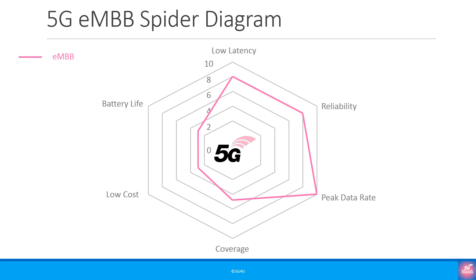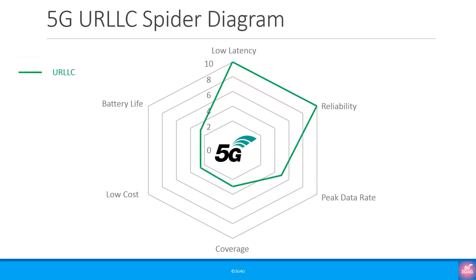This is the Enhanced Mobile Broadband or eMBB spider diagram. As you can see, the emphasis is on peak data rates with a reasonably low latency and a reasonably high reliability. On the other hand, for URLLC there is a very high emphasis on low latency as well as high reliability. We expect 5-nines reliability, and this requirement is going to be changed from 3GPP Release 16 onwards to 6-nines.